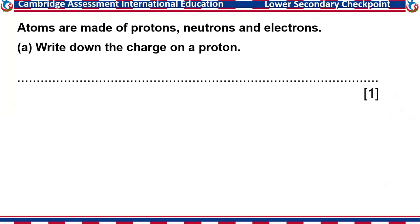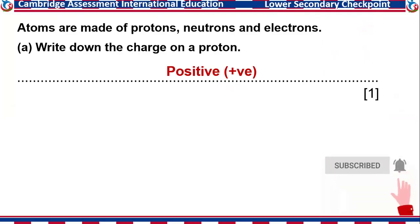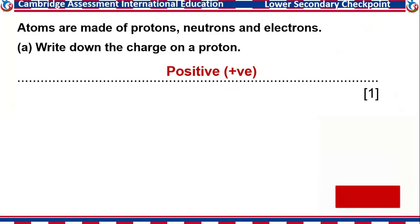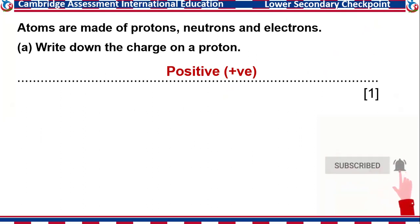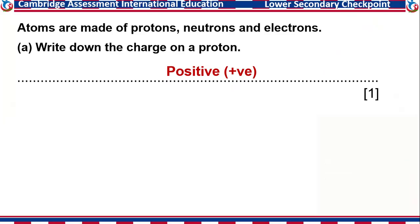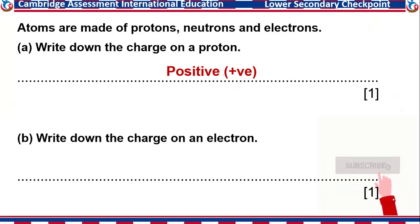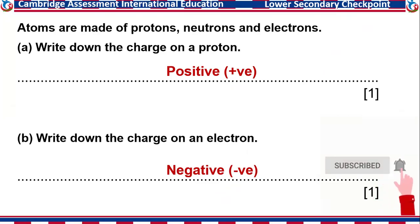Atoms are made of protons, neutrons, and electrons. Write down the charge on a proton. In atomic structure, protons have a positive charge — they are positively charged subatomic particles. The next question asks for the charge on an electron. Protons are positively charged, while electrons have a negative charge. Neutrons are neutral — they have no charge.